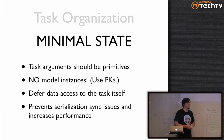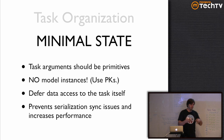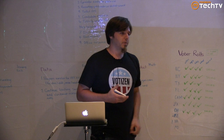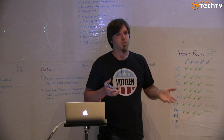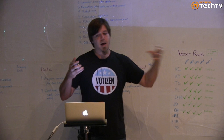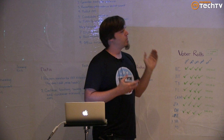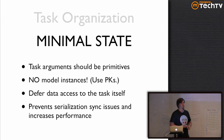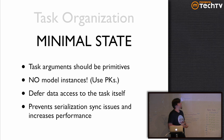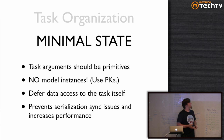You want to try to keep task arguments to minimal state. For instance, model instances — you should pass the PK of the model rather than the model instance. Celery is actually serializing that full model instance, sending it up to your broker and back down to the workers. You don't know how long that's going to take, and in the meantime you could have deployed new code with a migration, so now your model instance state is out of sync with the actual model definition in your codebase. You will avoid all of this, minimize the size of your messages — less memory overhead and faster message passing — if you only use minimal state. Defer data access to the task itself; it increases performance and prevents serialization synchronization issues.